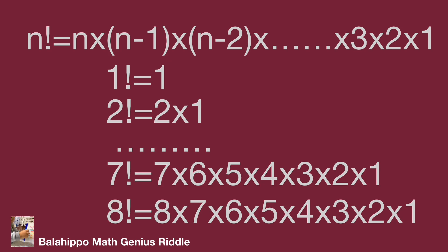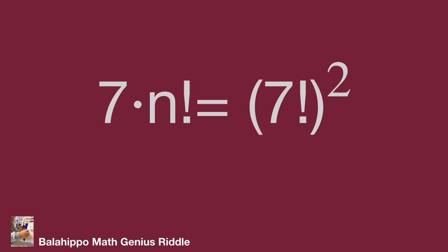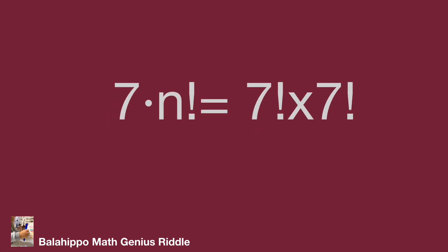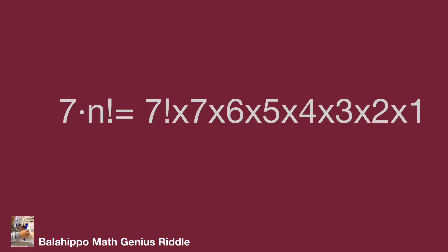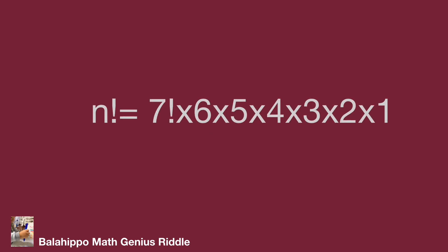Now back to our given equation: 7 times n factorial equals the quantity 7 factorial squared. We know 7 factorial equals 7 times 6 times 5 times 4 times 3 times 2 times 1. Substitute this value for 7 factorial on the right side. There are 7 factors in both expressions. Eliminate the 7 from both sides, so n factorial equals 7 factorial times 6 times 5 times 4 times 3 times 2 times 1.